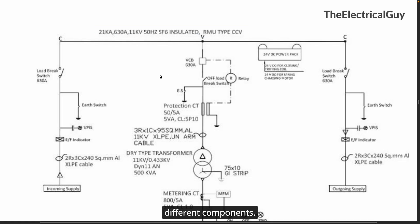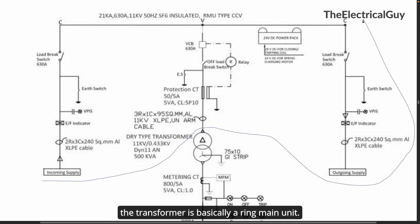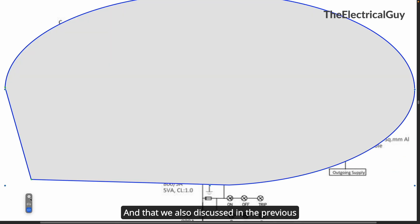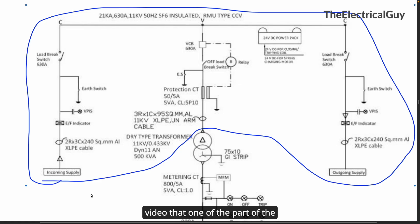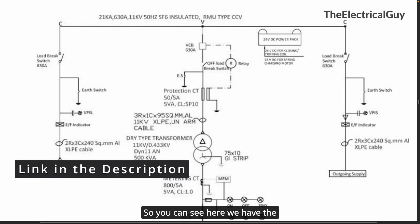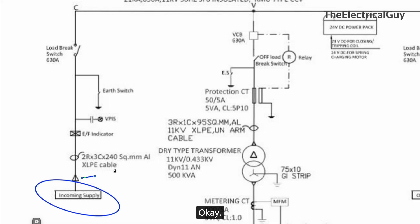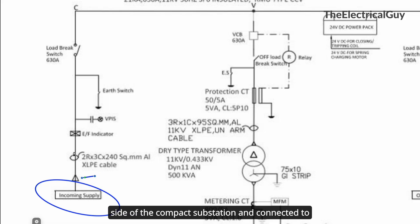Now let us talk about the different components. If you notice, this complete section excluding the transformer is basically a ring main unit — which we also discussed in the previous video as one of the parts of the compact substation. If you don't know what a ring main unit is and why we use it, I have a dedicated playlist on that; link is in the description. The incoming supply enters at the cable termination point, and the cable being used is 2-run 3-core 240 square mm aluminum XLPE cable, connected to the incomer of the ring main unit.